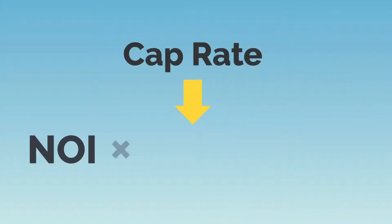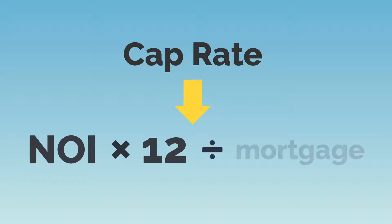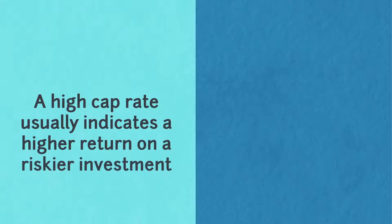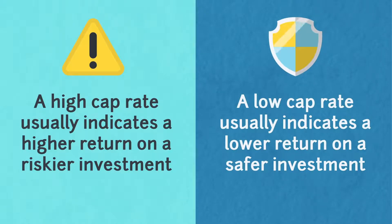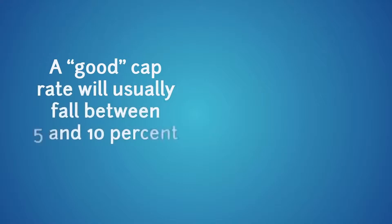To find your cap rate, multiply your NOI by 12 to find your annual NOI, then divide that number by your mortgage. A high cap rate usually indicates a higher return on a riskier investment, and a lower cap rate usually indicates a lower return on a safer investment. A good cap rate will usually fall between five and ten percent.